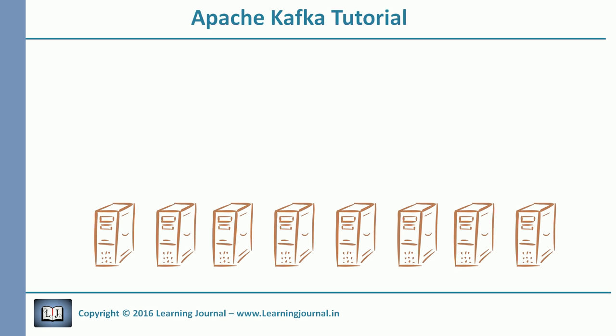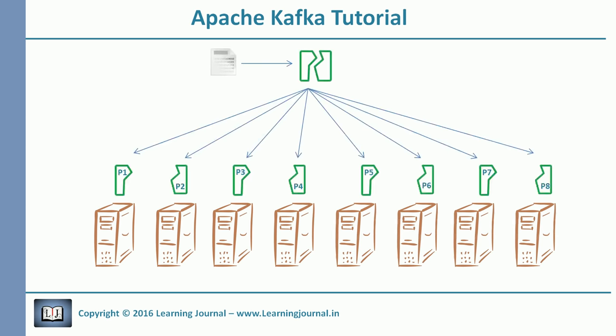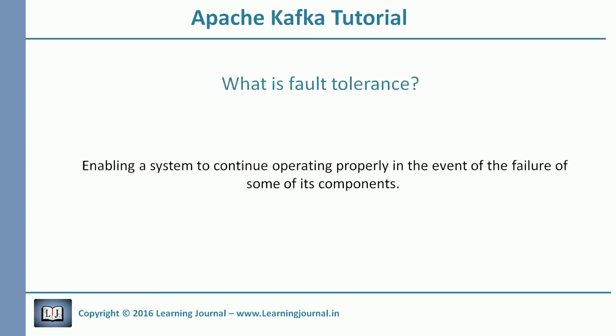In the previous session, we learned that Kafka is a distributed system and it works on a cluster of computers. Most of the time, Kafka will spread your data in partitions over various systems in the cluster. So, if one or two systems in the cluster fail, what will happen to your data? Will you be able to read it? Probably not. That's a fault. Can we tolerate it?